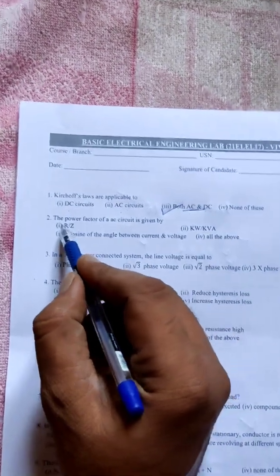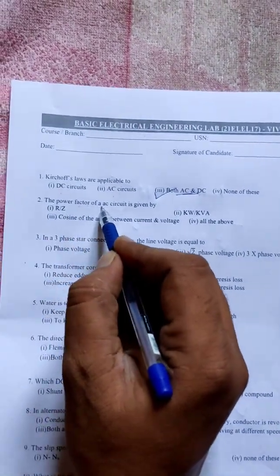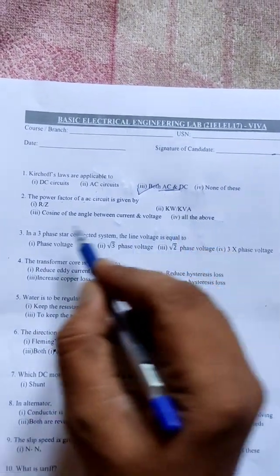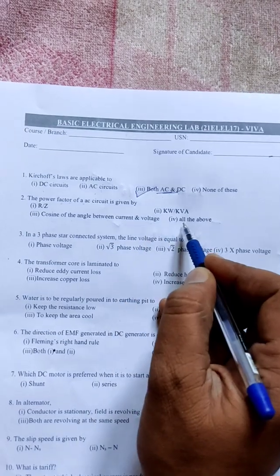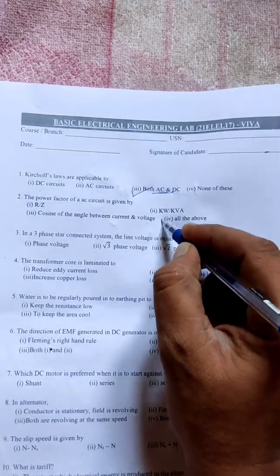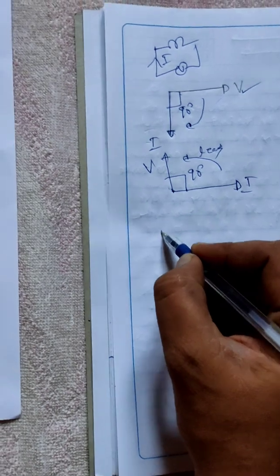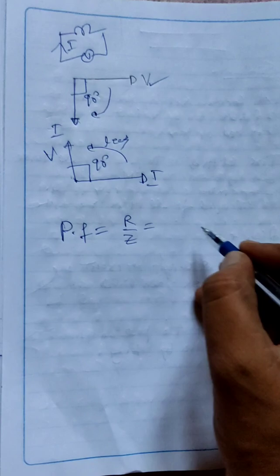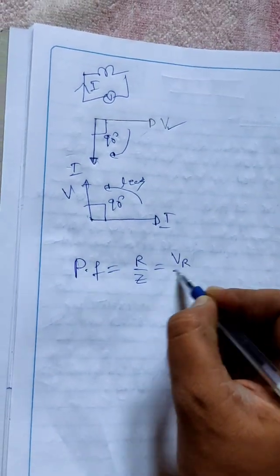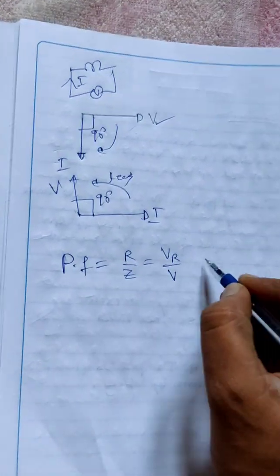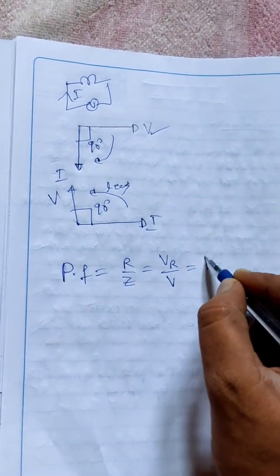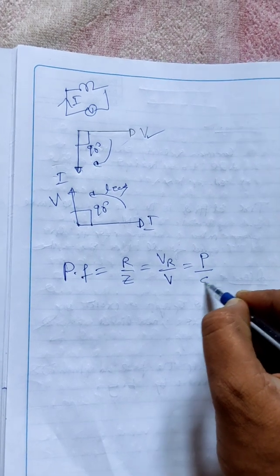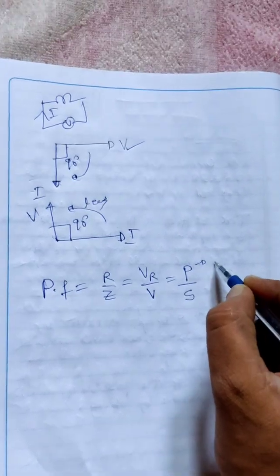The power factor of an AC circuit is given by — R by Z, kilowatt by kVA, cosine of the angle between voltage and current, or all of the above? The correct answer is all of the above. The power factor formula is R by Z, and we can also find power factor from the voltage equation: VR by V.